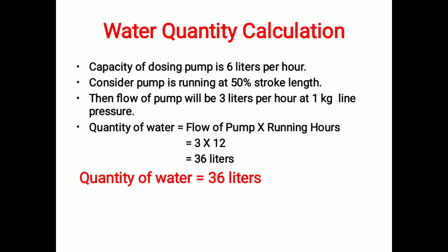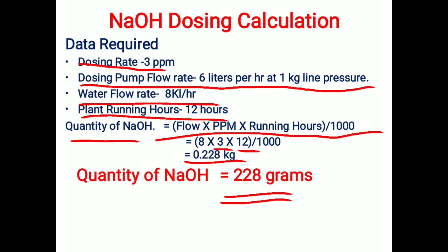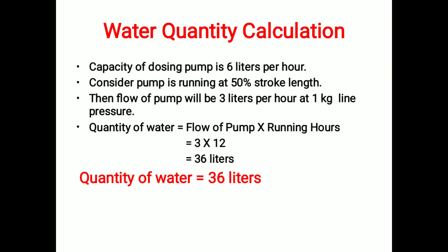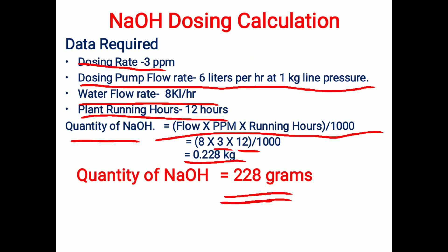Now we will calculate the water quantity for making the solution. We already have the NaOH quantity calculated as 228 grams. To calculate the water quantity, we use the dosing pump capacity, which is 6 liters per hour as shown previously.